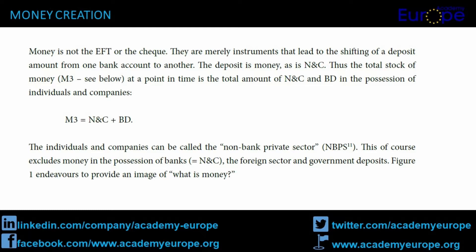Thus the total stock of money, M3, at a point in time is the total amount of NNC and BED in the possession of individuals and companies. M3 = NNC + BED. The individuals and companies can be called the non-bank private sector, NBPS. This of course excludes money in the possession of banks (equal NNC), the foreign sector, and government deposits. Figure 1 endeavors to provide an image of what is money.